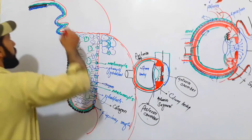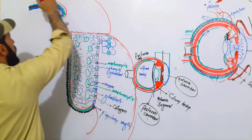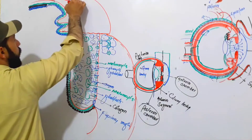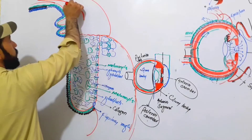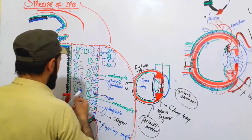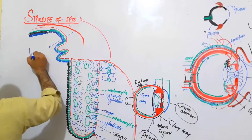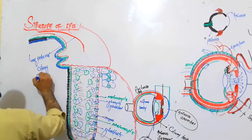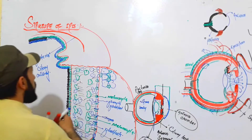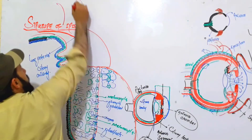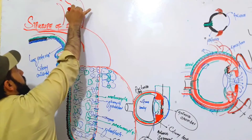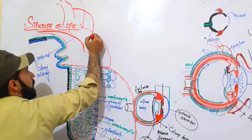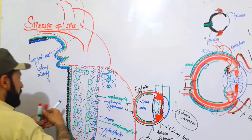As we discussed in the previous lecture, in the iris and in the ciliary body, there comes the long posterior ciliary artery. From the anterior side, where the muscles are, the muscular branches of the ophthalmic artery give a branch that pierces the sclera and enters the ciliary body. This artery is called the anterior ciliary artery.